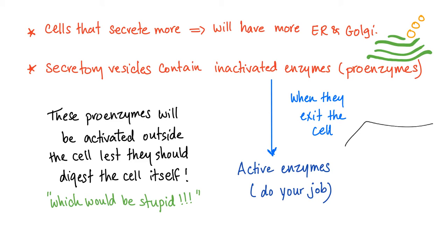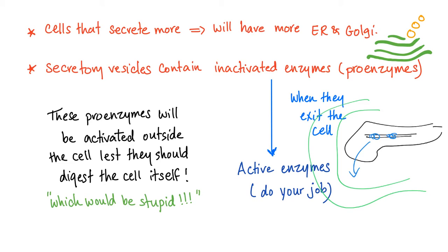Why wait until they leave the cell? Because otherwise they would digest the cell. For instance, the pancreas has proteolytic enzymes to digest proteins. While they are in the pancreas, they are proenzymes. Once secreted into the duodenum, they can digest proteins. But if activated inside the pancreas, they would digest the pancreas — which is not cool.